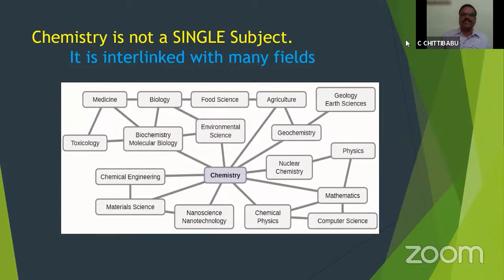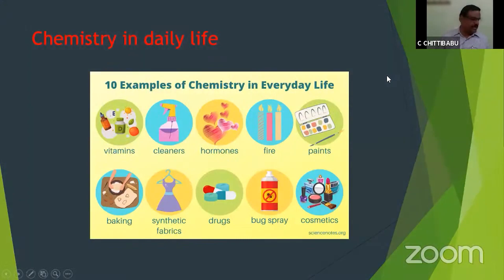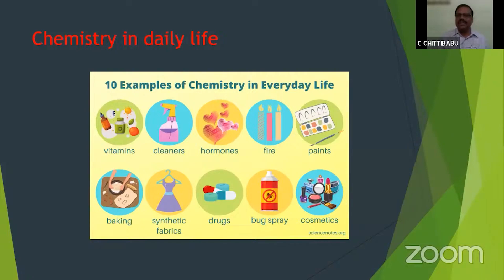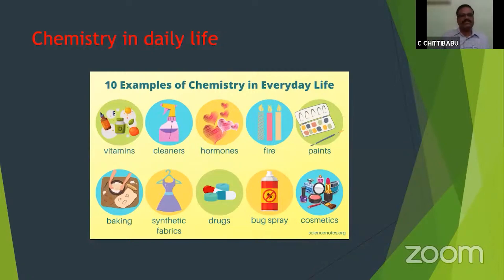Let us go to chemistry in everyday life. Each and every step of human life is related with chemistry. We eat chemicals, we drink chemicals, and our body itself is made up of a large number of chemicals. The different components of chemistry shown on the slide include vitamins, cleaners, hormones, fire, paints, and so on — these are all different parts of life.